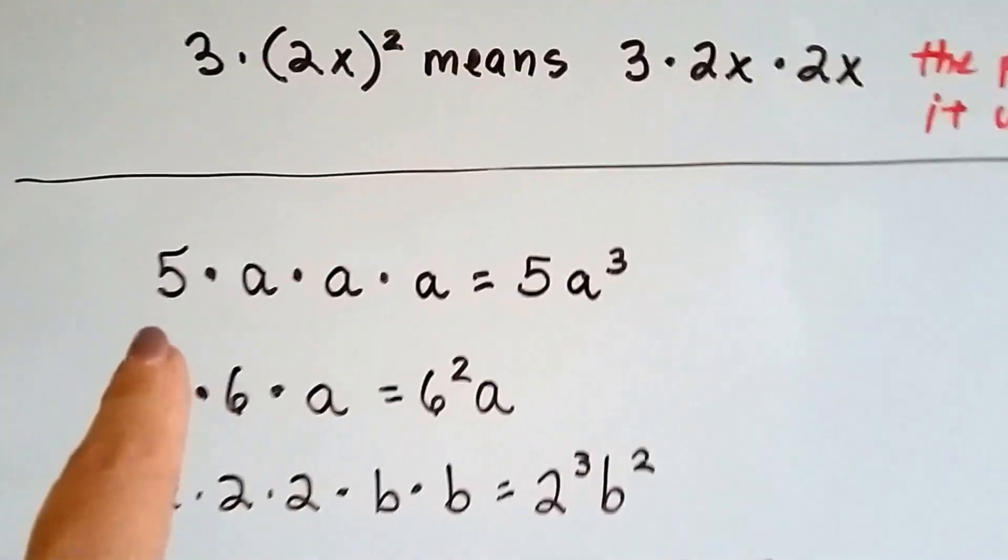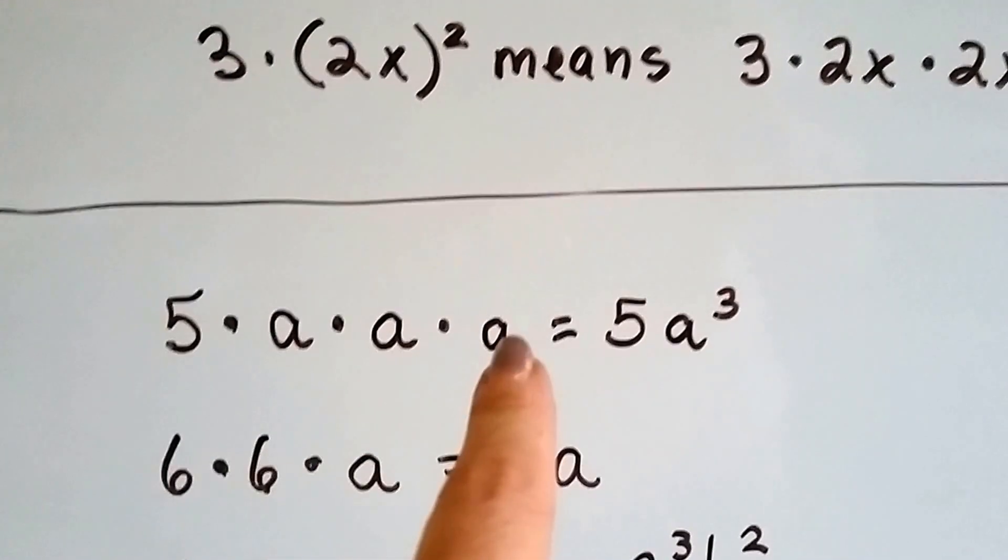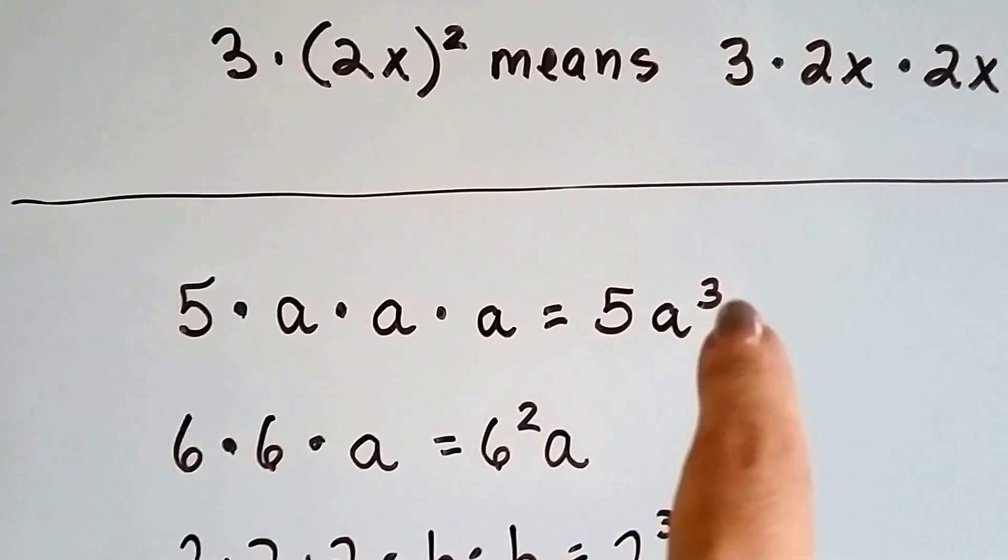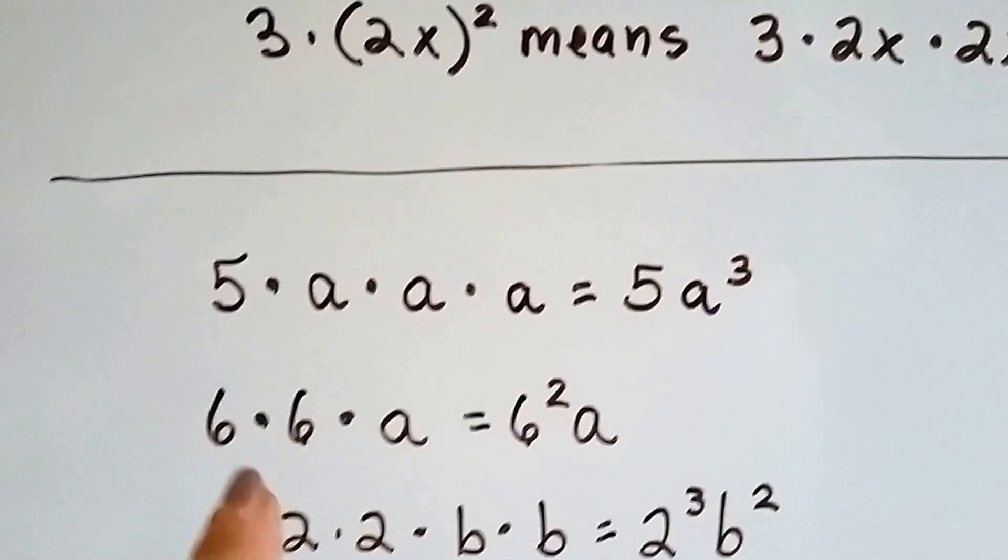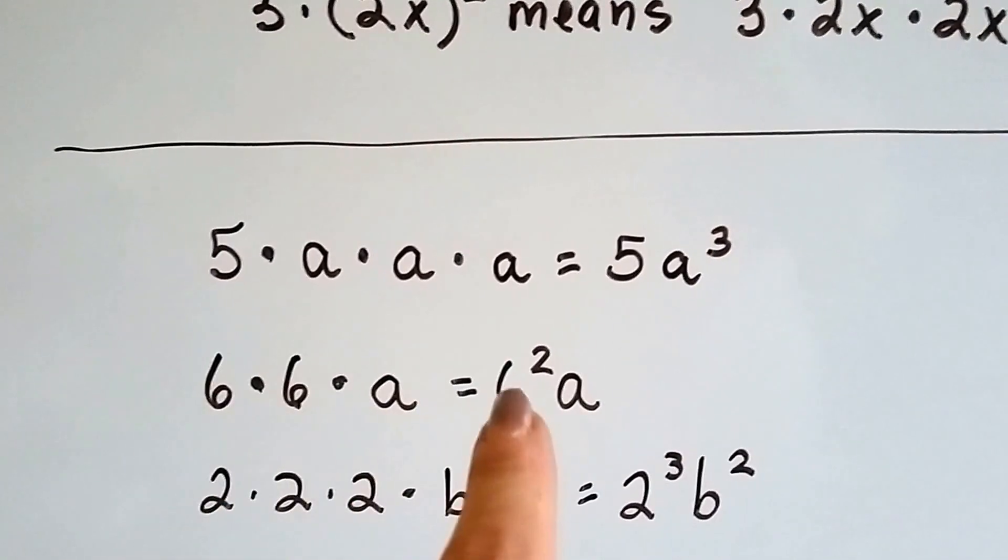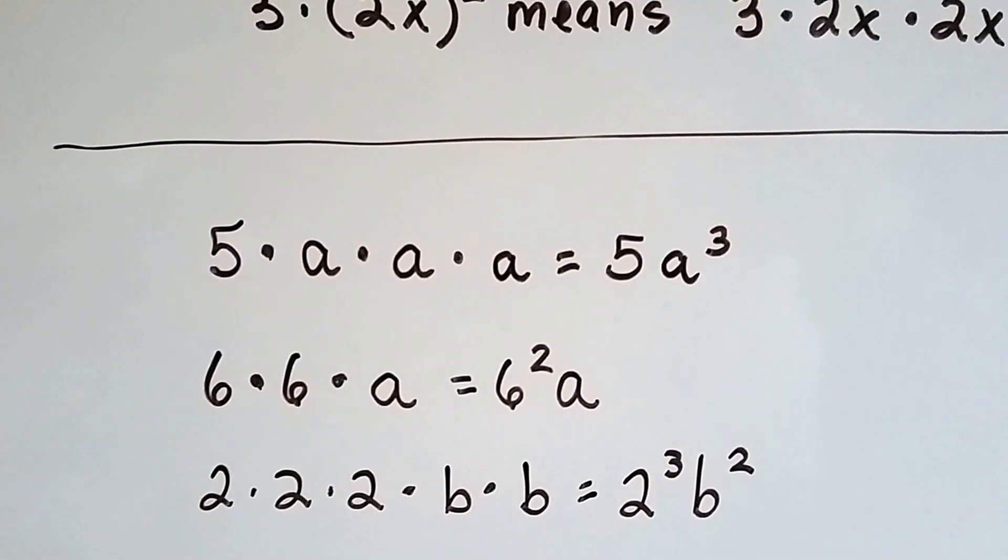If we've got 5 times a times a times a, that's 5a to the third power. See how it only affects the 3a's? And if we have 6 times 6 times a, then we have 6 to the second power a. See?